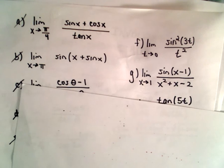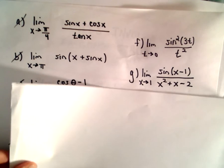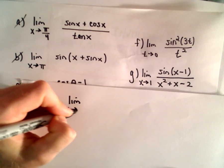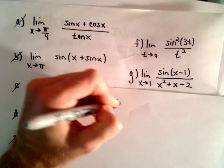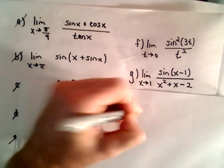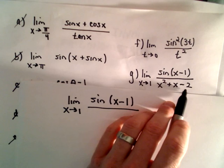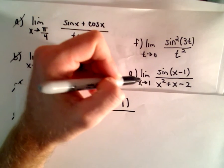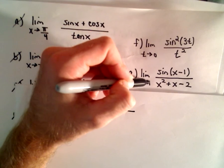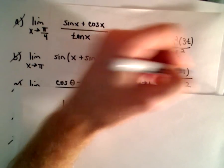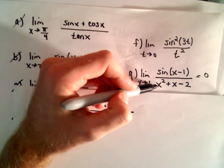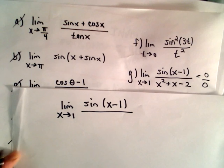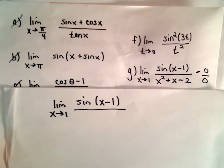Part G — kind of the same idea. We've got the limit as x approaches 1 of sine of x minus 1 over x squared plus x minus 2. If you plug in x equals 1, you're going to get sine of 0, which gives you 0. In the denominator, you've got 1 squared plus 1 minus 2, which is 0. So you get 0 over 0, an indeterminate form.